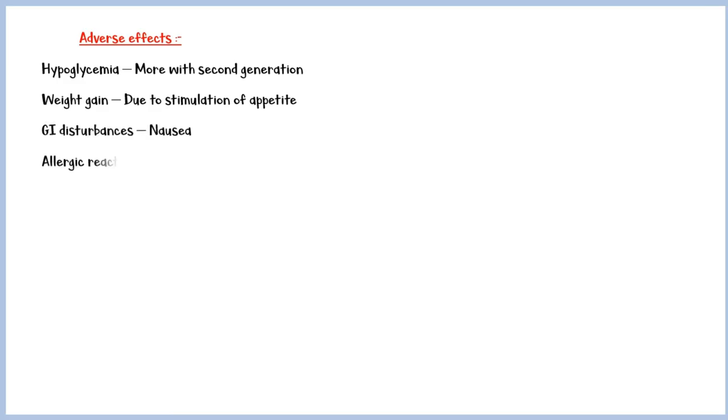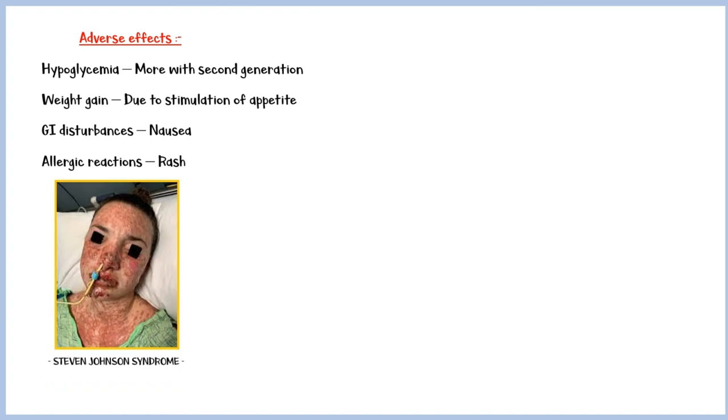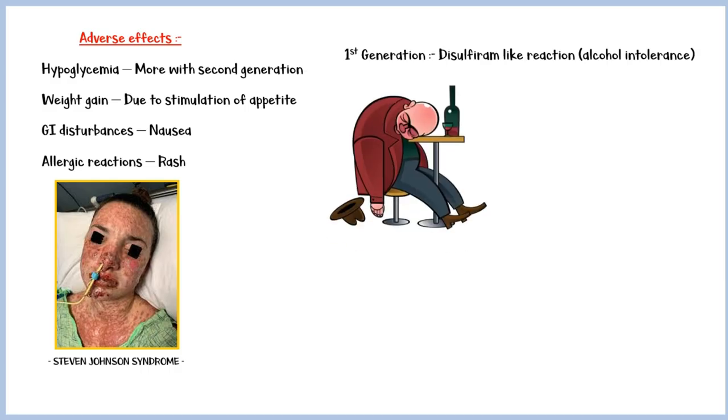Common adverse effects include hypoglycemia, especially with the second-generation sulfonylureas as they are more potent, weight gain due to stimulation of appetite, GI disturbances such as nausea, and allergic reactions like rash. On rare occasions, sulfonylureas can cause a severe skin condition known as Stevens-Johnson syndrome. Moreover, first-generation sulfonylureas can cause a disulfiram-like reaction, also known as alcohol intolerance. This means that if a person takes alcohol while on sulfonylureas, he might experience symptoms like nausea and vomiting, flushing, dizziness, and headache.